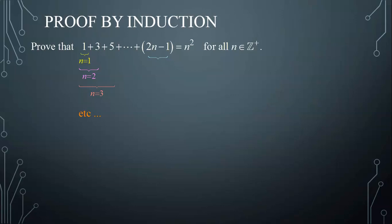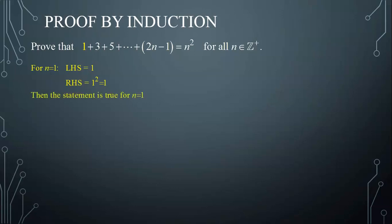Now to prove the statement by induction, we start by checking the statement true for n equals to 1. For n equals to 1, the left-hand side is equal to 1, while the right-hand side is equal to 1 squared, which is 1. The left-hand side being equal to the right-hand side, then the statement is true for n equals to 1.